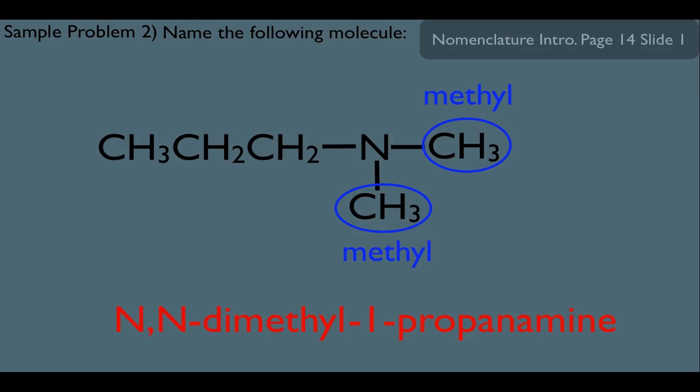Notice what we're doing here. Instead of calling out the numbers that these substituents are connected to, we're using the N instead of a number. So that's why, remember, if there's two methyls, you have to call out each one by saying N, N. And again, because there's two, that's what the di is for in the dimethyl.